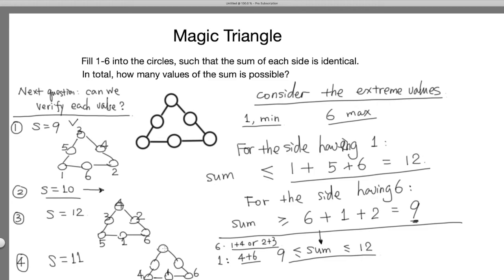Can 3 be here? If it's 3, this has to be 4, so it's impossible. This has to be here, and this is 3, and this is 5. So we have a solution for s equals 11 as well.